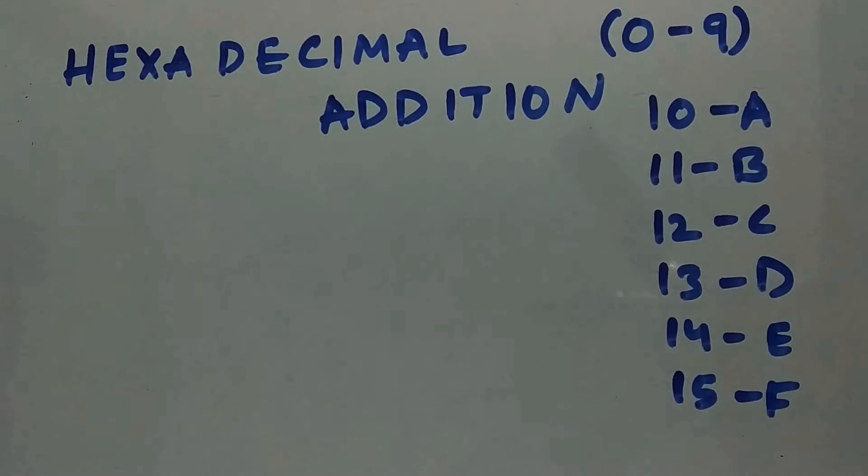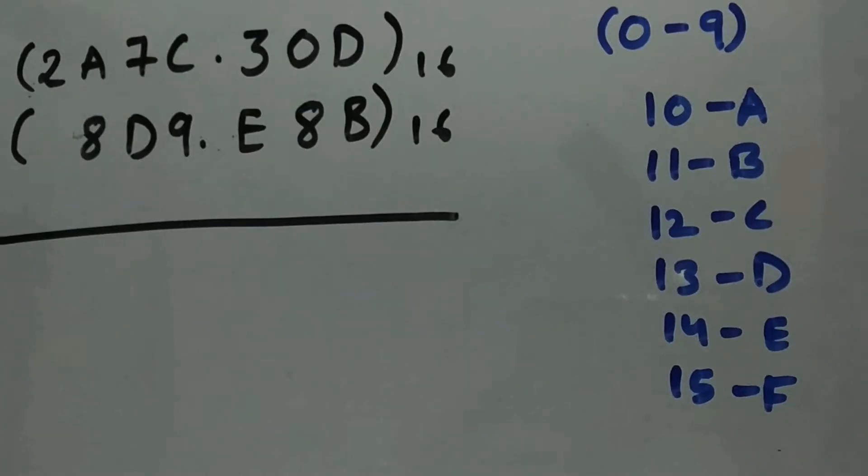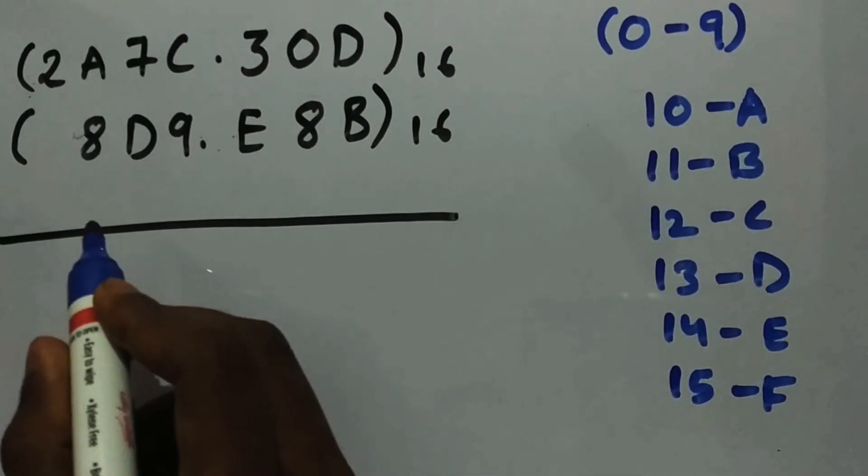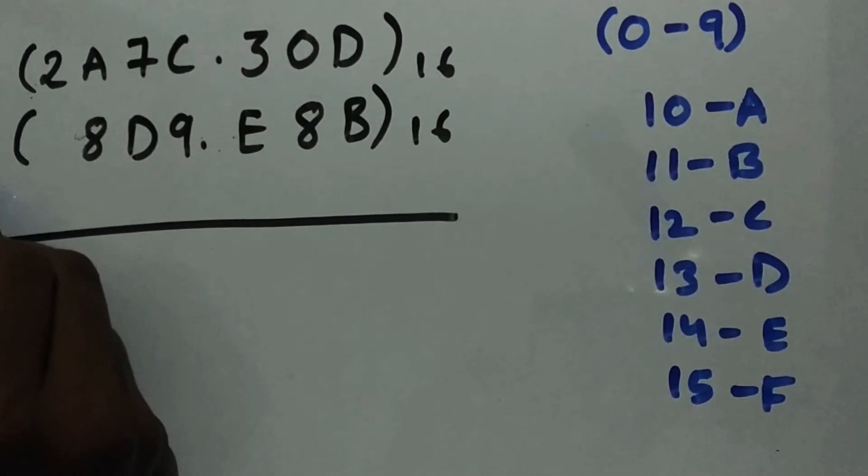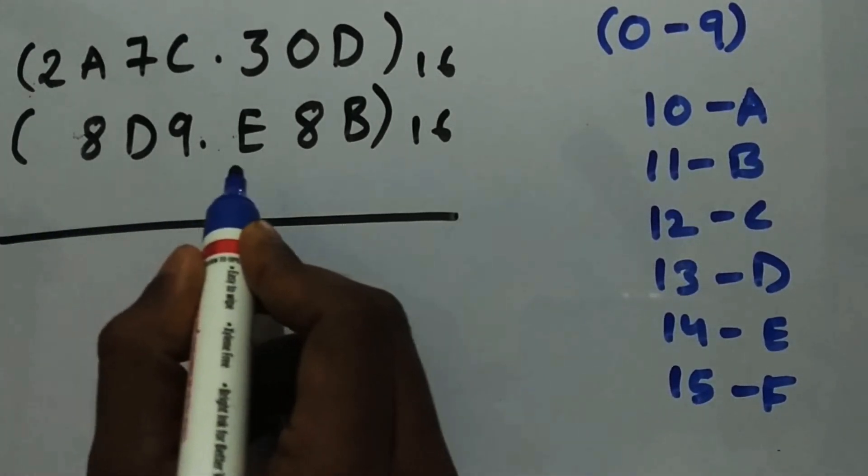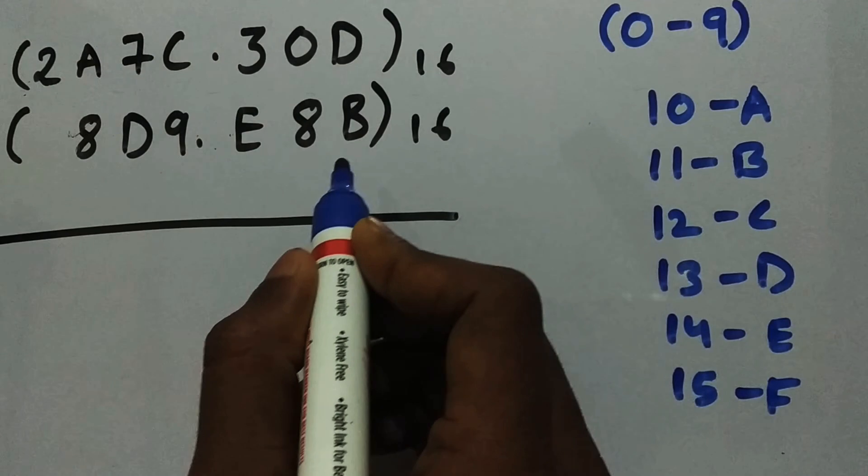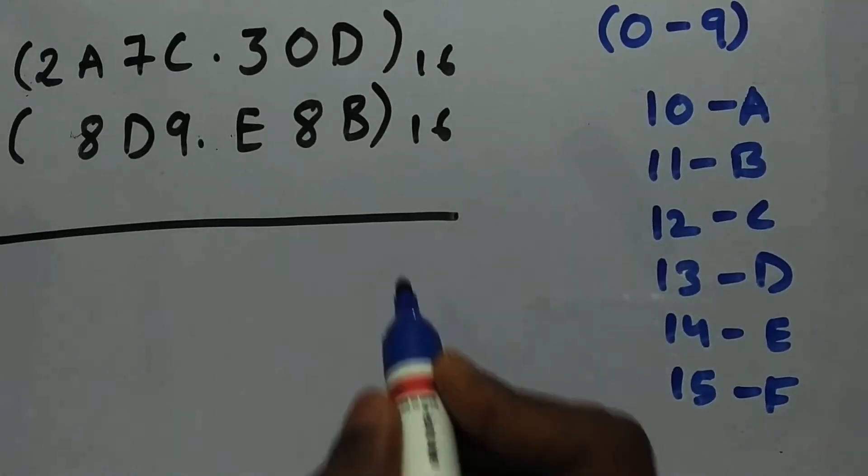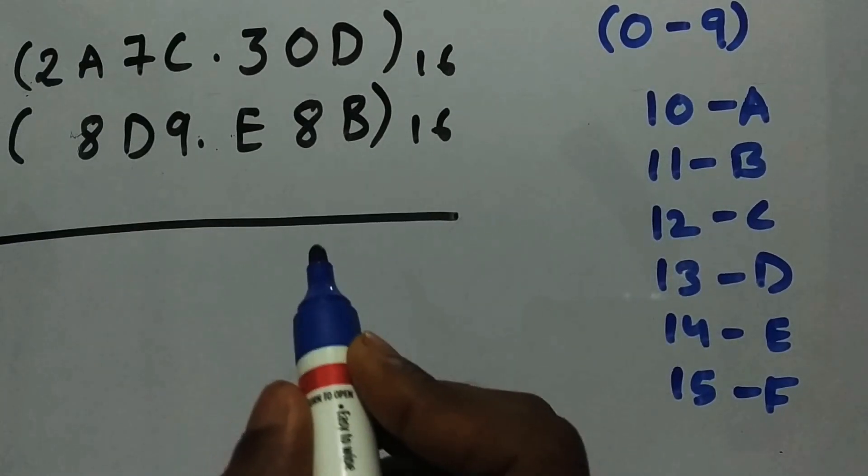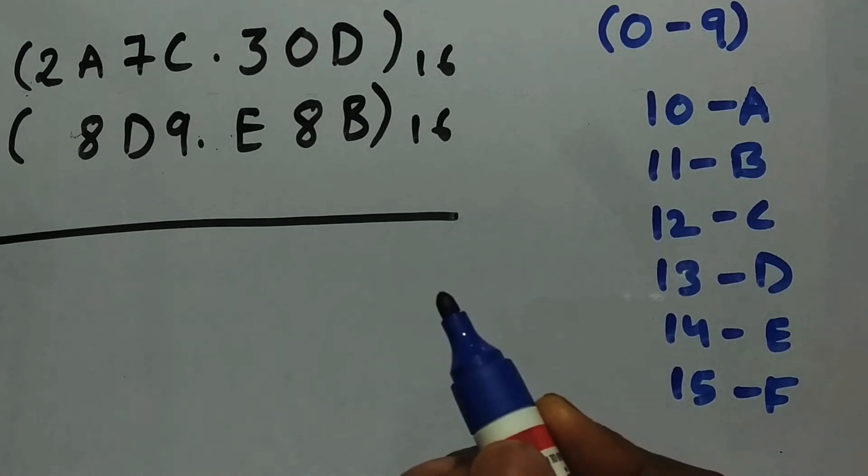an example to add two hexadecimal numbers. Let's take this example over here: 2A7C.30D base 16 is added with 8D9.EE8B. Now we will add in normal decimal form, and then whatever results we are getting will be converted into hexadecimal form and